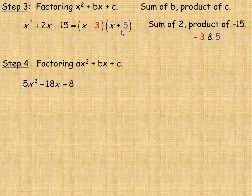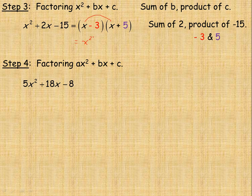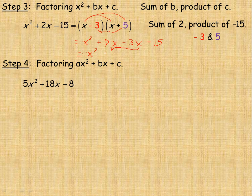We put negative 3 after the x in one binomial and 5 after the x in the other, giving the factors x minus 3 and x plus 5. We can always check by expanding: x times x is x squared, x times 5 is 5x, negative 3 times x is minus 3x, and negative 3 times 5 is negative 15. Combining the middle terms, 5x minus 3x gives positive 2x, and we have x squared plus 2x minus 15 — exactly what we started with. So it checks out.